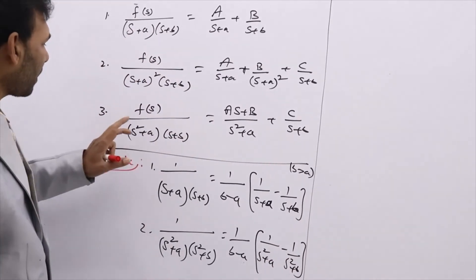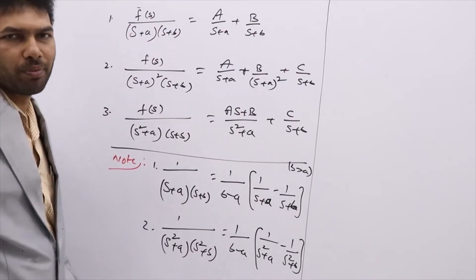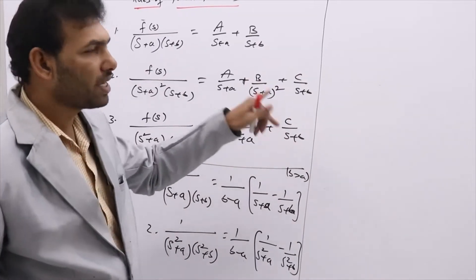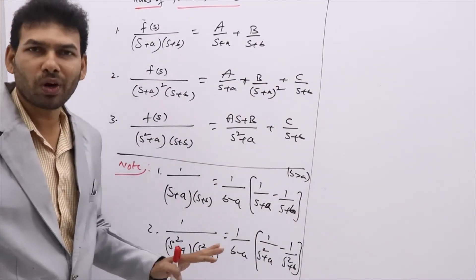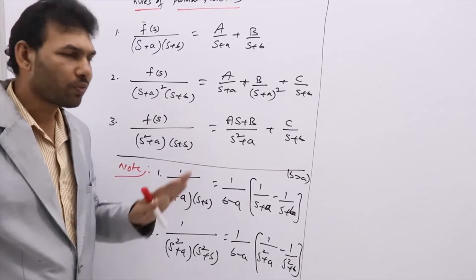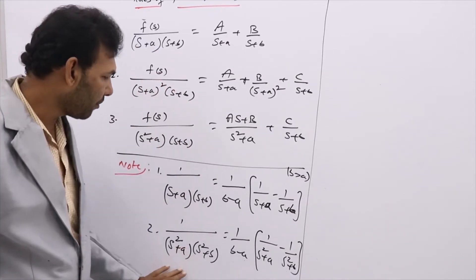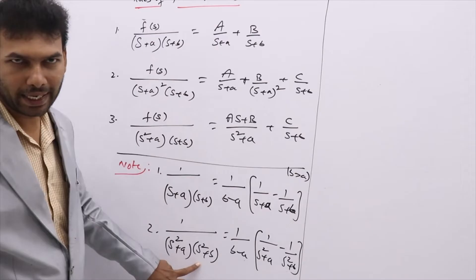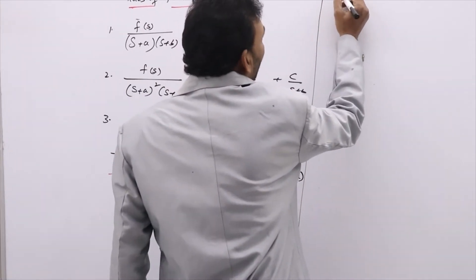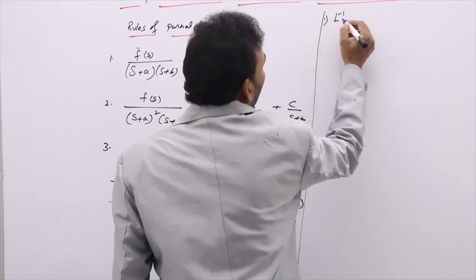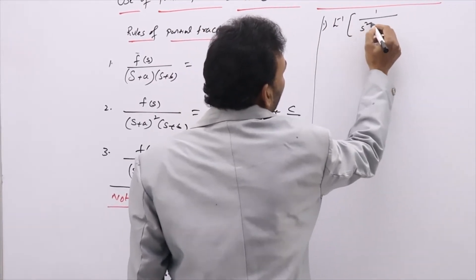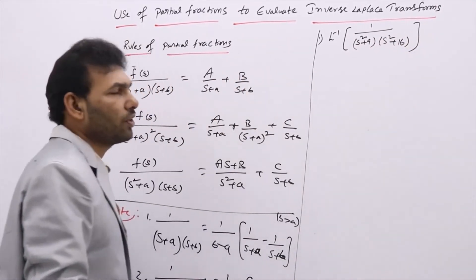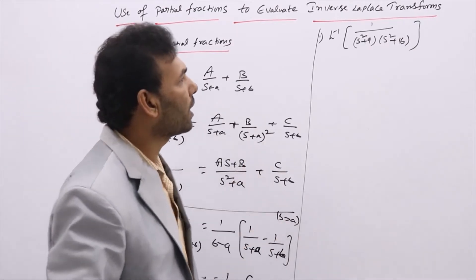I will give one example to understand this second shortcut. Evaluate L⁻¹{1/[(s²+9)(s²+16)]}. Even if you have s in the numerator, you can use this. Simply treat 9 as a and 16 as b and apply the shortcut: 1/(b−a) times [1/(s²+a) − 1/(s²+b)].